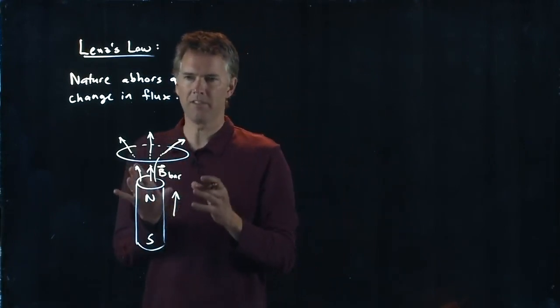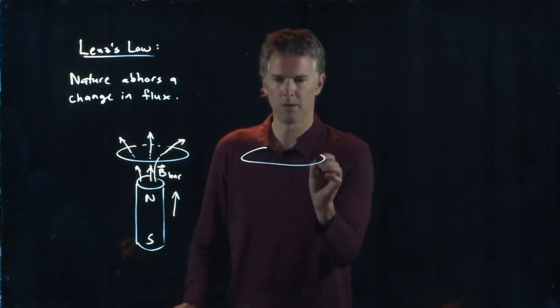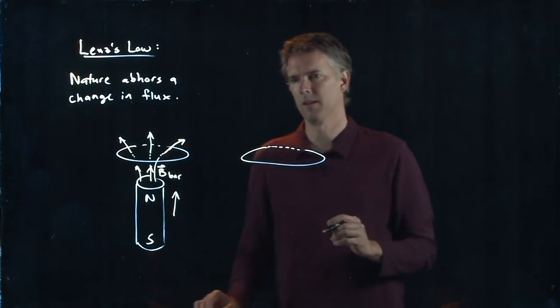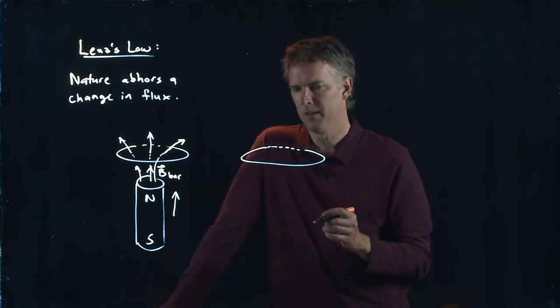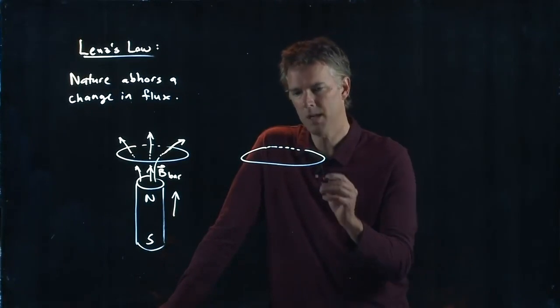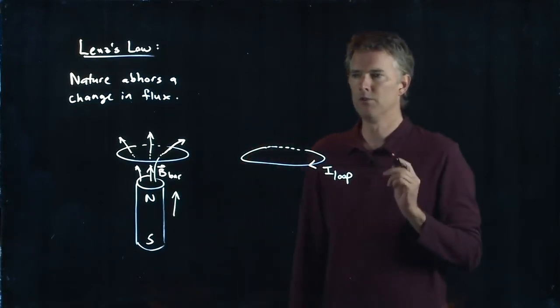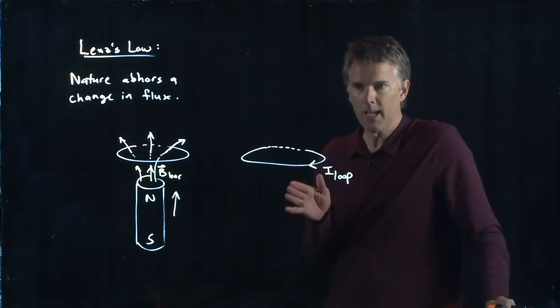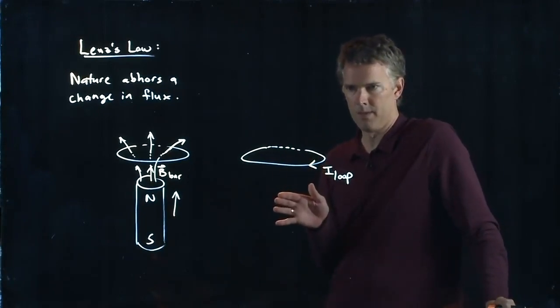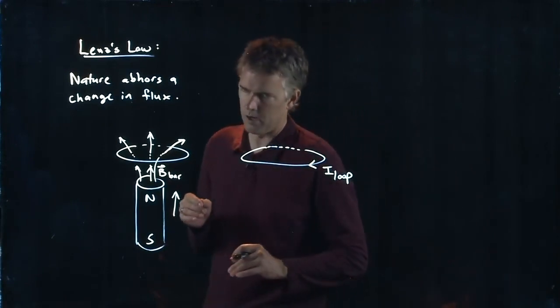And so it wants to make a B field that is going to point down. The loop wants to generate a current such that the B field is pointing down, which means it's going to develop in this direction. If I use my right hand rule, what I said was if you put your fingers in the direction of the current, then your thumb will be the direction of the B field.